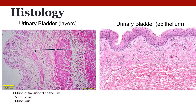The last slide shows the bladder. The left panel shows the layers of the urinary bladder: from left to right, the white area is the lumen where urine would be, then the mucosa (arrow one), then the submucosa which is a much wider area, and finally the muscularis on the right-hand side. The right panel shows the bladder epithelium with transitional epithelium visible along the top and some submucosa as well, at a more zoomed-in view. That concludes this slide show; you can now move on to histology or labeling.